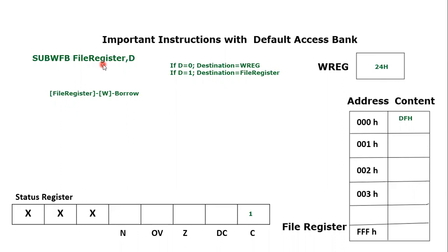The operation is: content of the file register minus the content of the working register minus B for borrow. We don't have a dedicated borrow flag in the PIC18F status register, so we use the carry flag — the carry flag value is used as borrow.